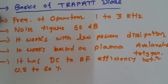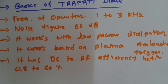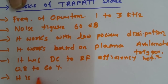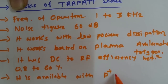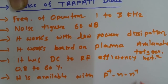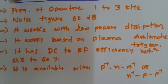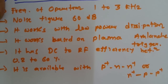When we talk about the internal structure, TRAPATT diode has basically three layers. It could be P-plus, N, N-plus or it could be N-plus, P, P-plus — different structures are available. The diode uses avalanche multiplication and is available with either a P-plus N N-plus structure or an N-plus P P-plus structure.